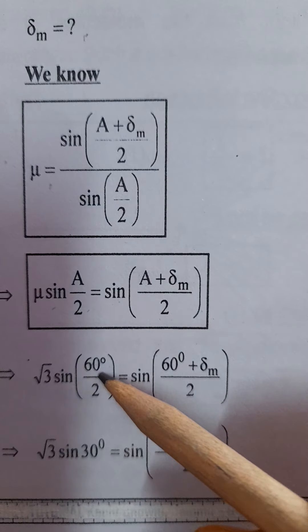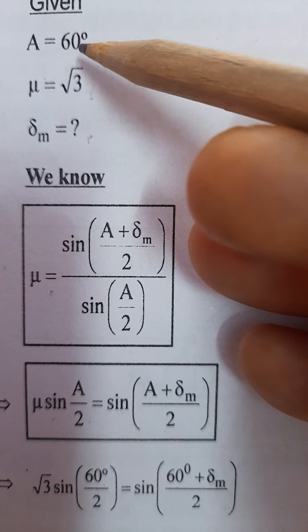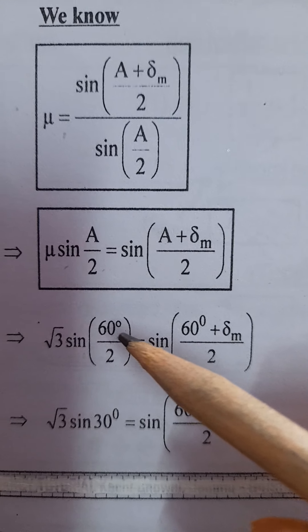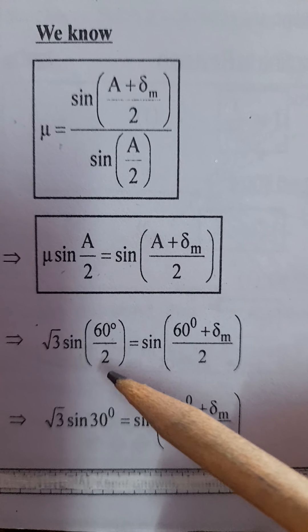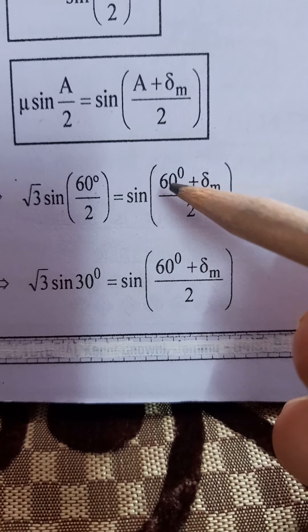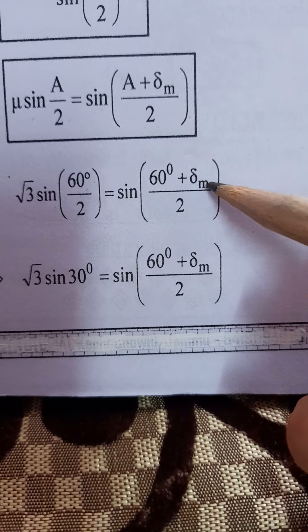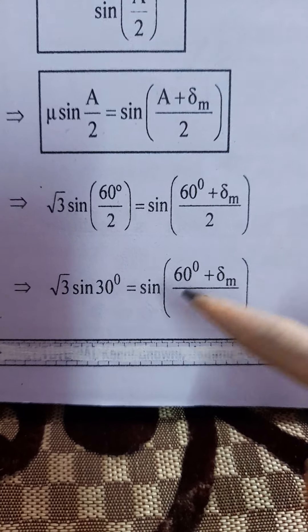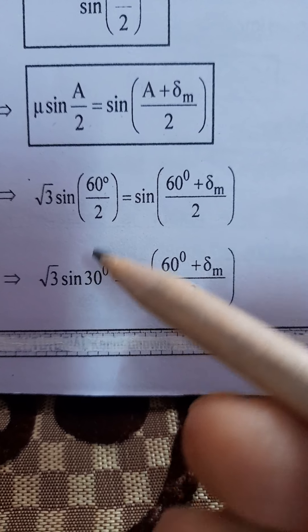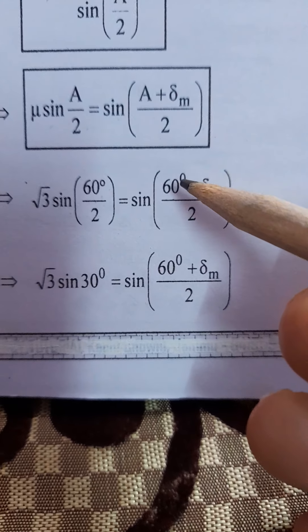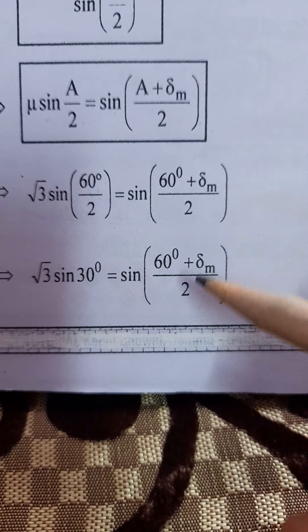The angle of prism A is taken as 60 degrees, so A divided by 2 is 30 degrees. Substituting: root 3 into sine of 30 degrees equals sine of (60 degrees plus angle of minimum deviation) divided by 2.